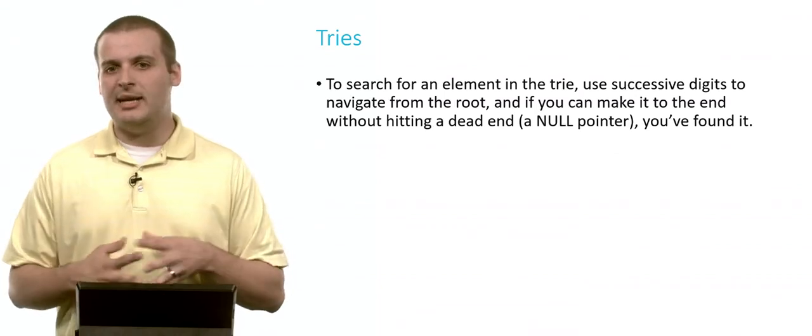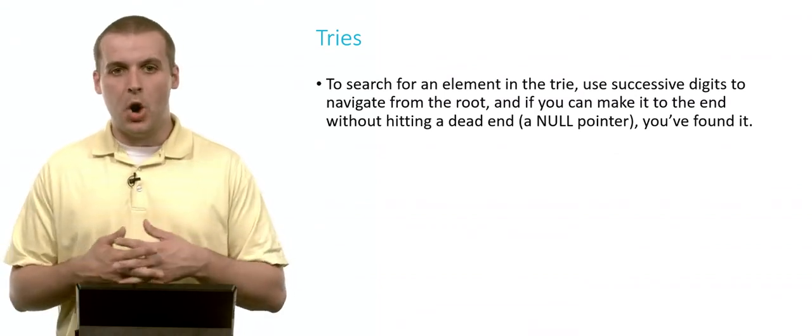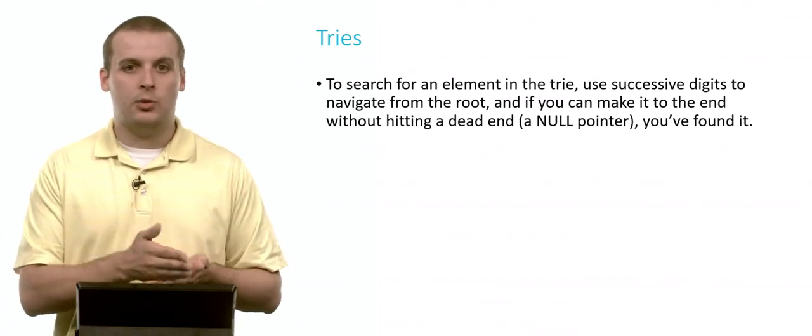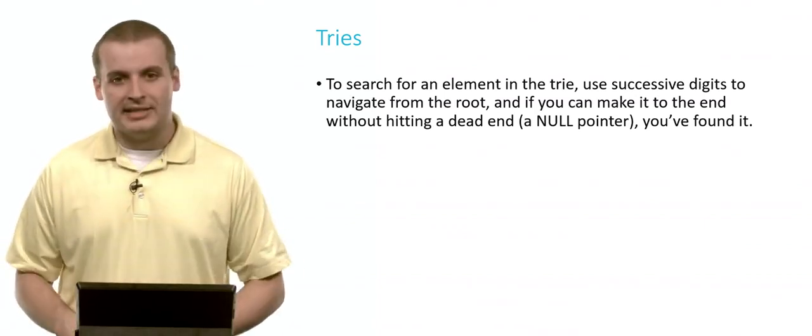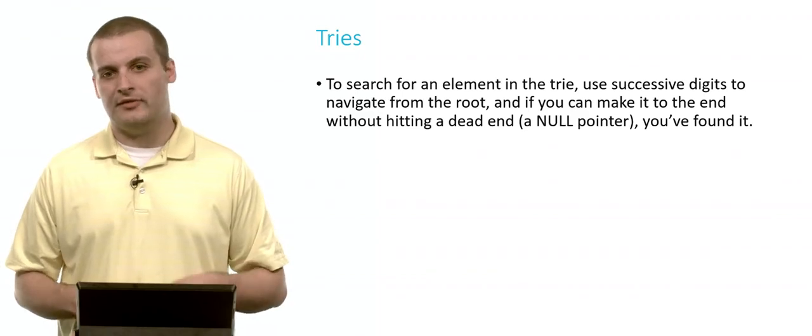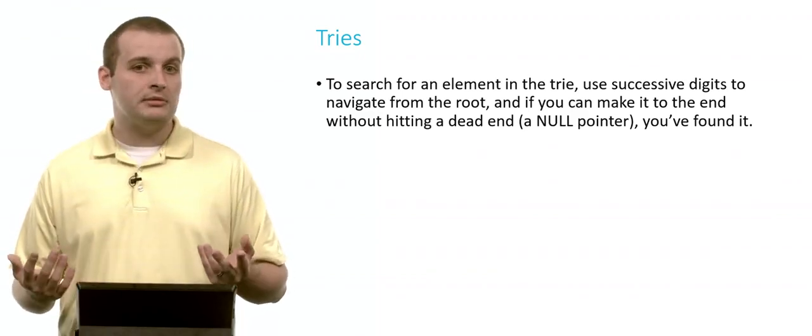So that's inserting things into the trie. Now we want to search for things. How do we search for things in the trie? Well, it's pretty much the same idea. Now we just use the digits of the key to see if we can navigate from the root to where we want to go in the trie. If we hit a dead end at any point, then we know that that element can't exist, or else that path would have already been cleared. If we make it all the way to the end, all we need to do is look down and see if that's the element we're looking for. If it is, success. If it's not, fail.